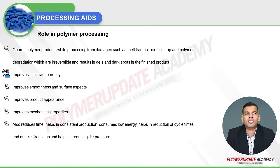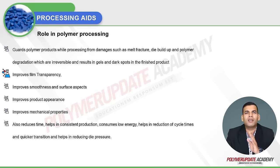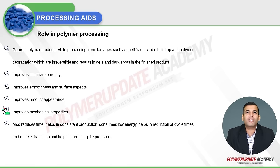Processing aids improve film transparency — since polymer degradation can cause light scattering that hinders transparency. They also improve the smoothness, surface aspects, and product appearance, as well as mechanical properties. They help in consistent production, consume low energy, reduce cycle time, enable quicker transitions, and help in reducing die pressure.